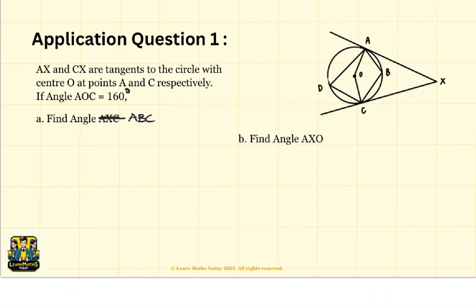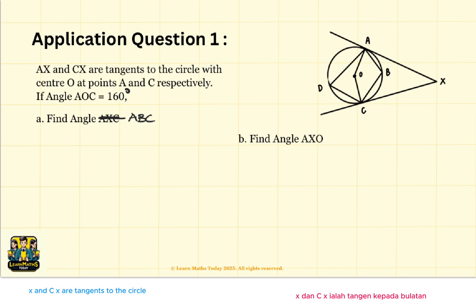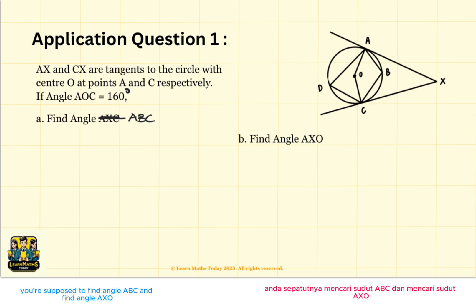Now spend about 5 to 10 minutes looking at this question and see whether you can solve it. In this question, AX and CX are tangents to the circle with center O at point A and C respectively. If angle AOC equals 160 degrees, you are supposed to find angle ABC and find angle AXO.